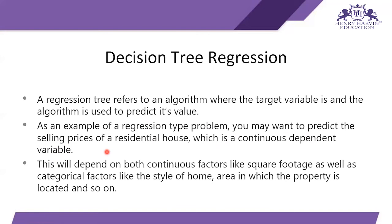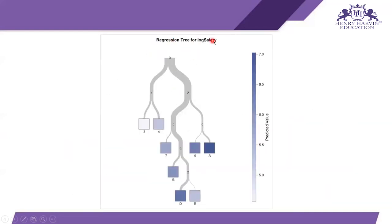For example, when we have to predict the price of a house, we use decision tree regression. This prediction depends on both continuous factors like square footage as well as categorical factors like style of the house, the area where the property is located, and other factors such as the city or street. This is what a regression tree for log salary looks like — depending on which branch you follow, the predicted value falls within a certain range.